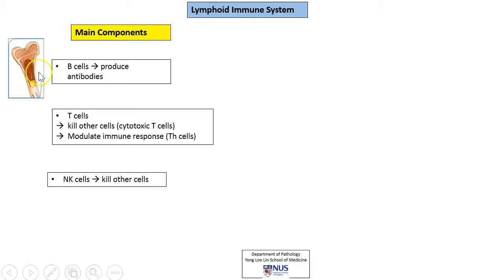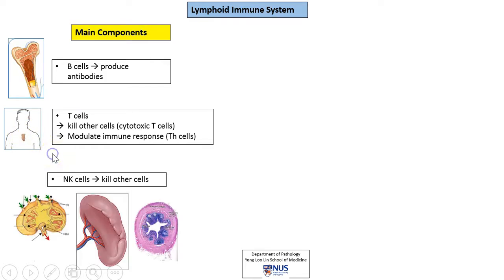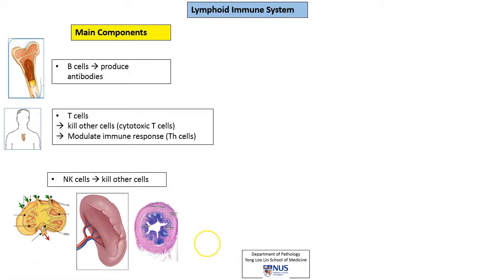B cells come from the bone marrow — easy to remember because bone starts with B. T cells come from the thymus, again easy to remember because of the T, and the thymus is an organ located in the anterior mediastinum. NK cells can come from a variety of sources including lymph nodes, the spleen, as well as mucosa-associated lymphoid tissue. This is actually a section of the appendix and you can see some reactive lymphoid follicles here. Collectively, these form the secondary lymphoid organs. A proportion of NK cells also originates from the bone marrow, similar to B cells.